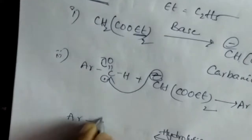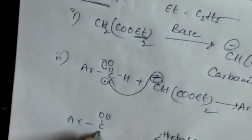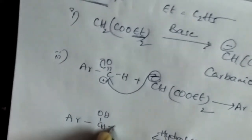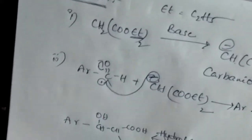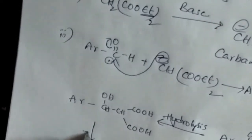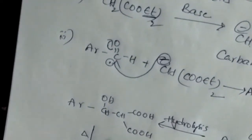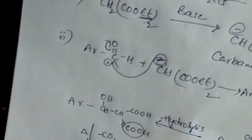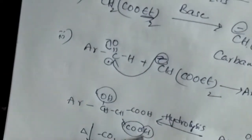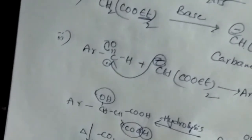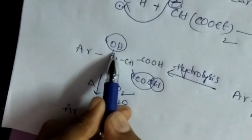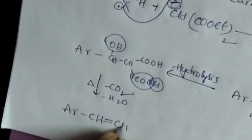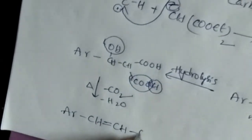After addition of H⁺ ions, the product is Ar-CH(OH)-CH-COOH. Now, on heating, there is removal of CO₂ and H₂O. So the final product is Ar-CH=CH-COOH, which is cinnamic acid — the alpha-beta-unsaturated carboxylic acid.